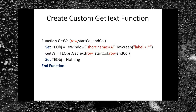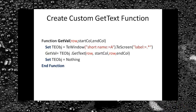Regarding creating a custom GetText function: in mainframe automation, we rarely need to retrieve text from multiple rows. Usually we validate values of a field in one particular row. Since the GetText method requires four parameters, we can create our own custom function — say GetVal — with only three parameters, where we pass just one value for the row parameter along with start and end column values.